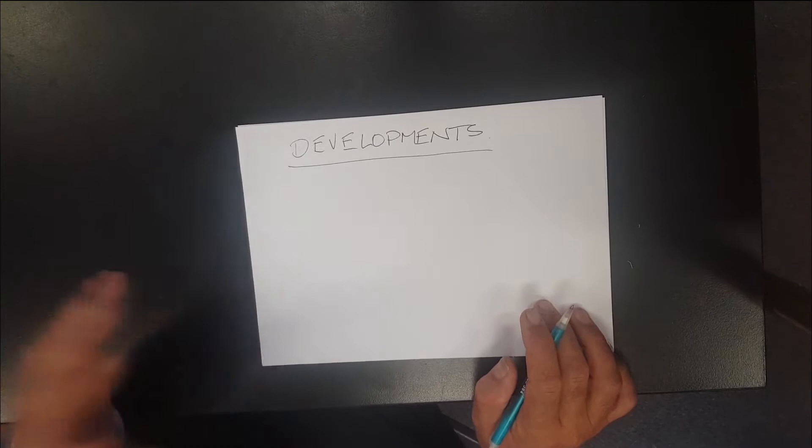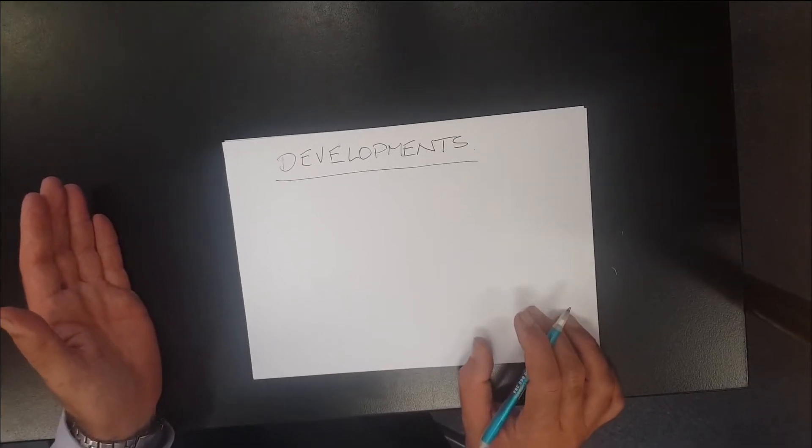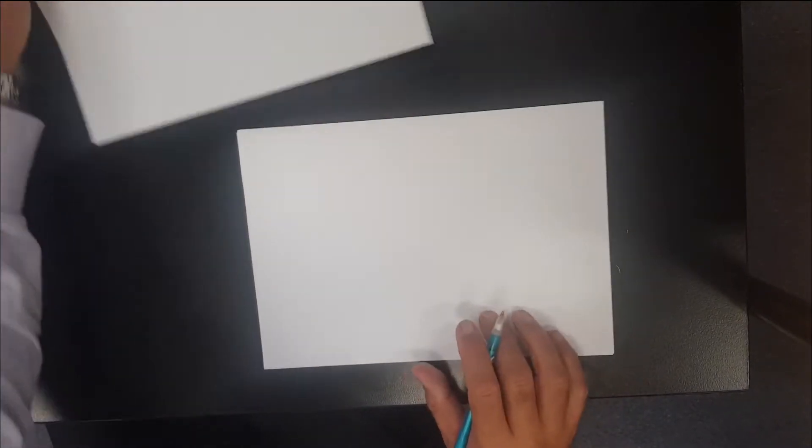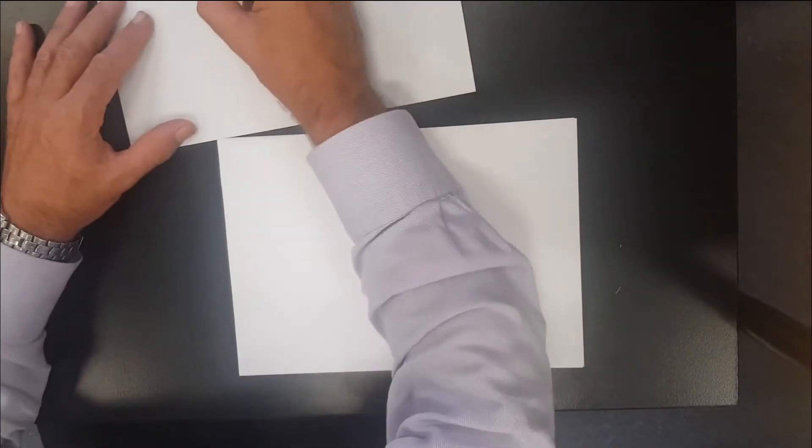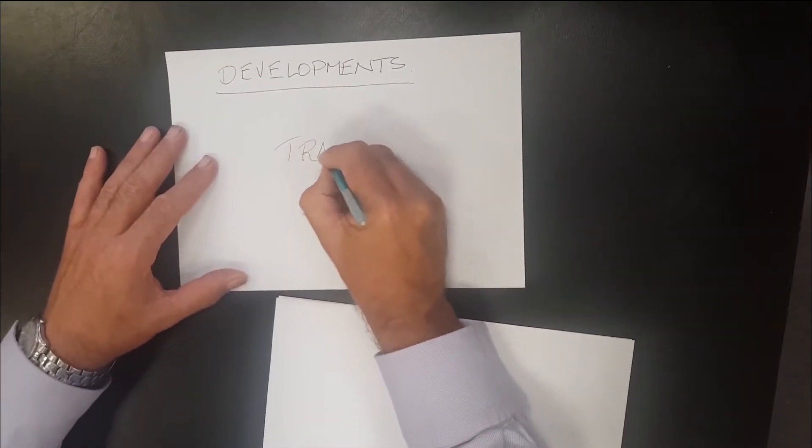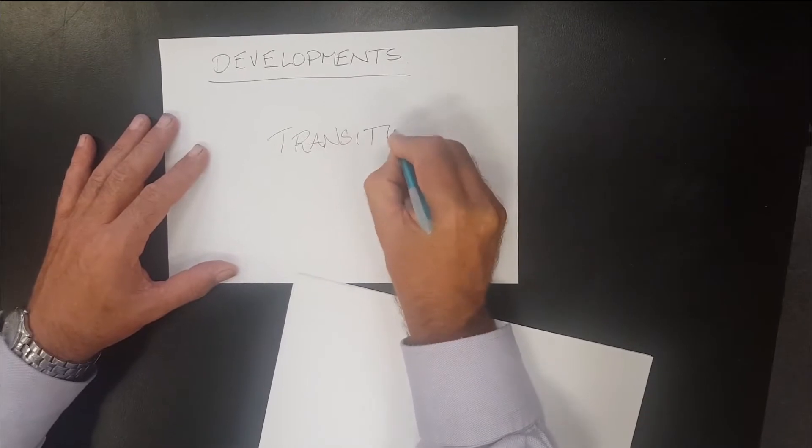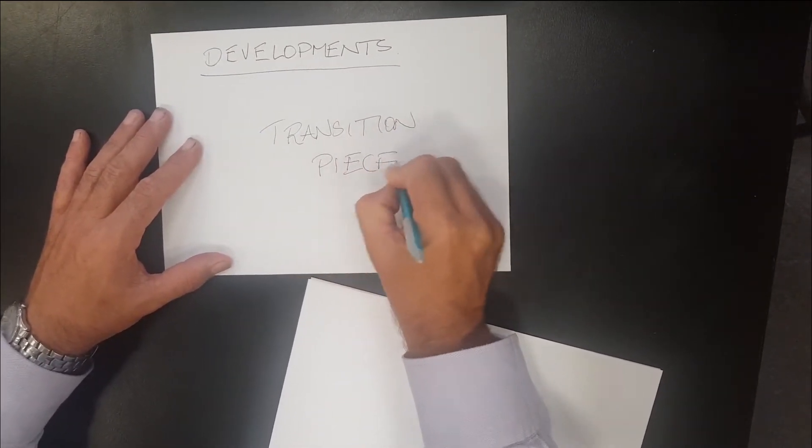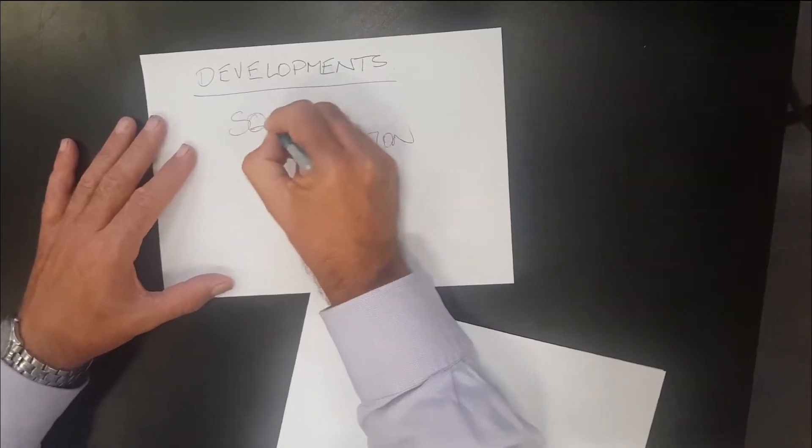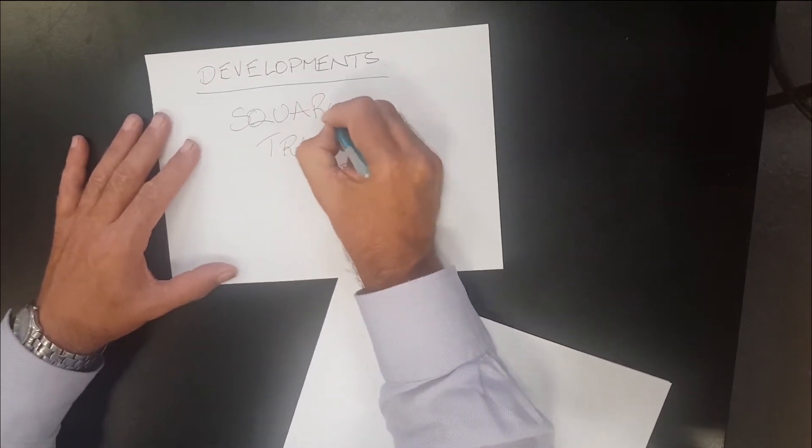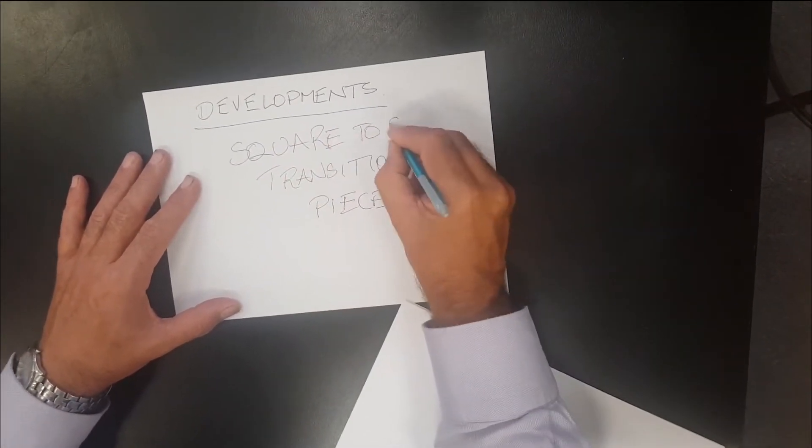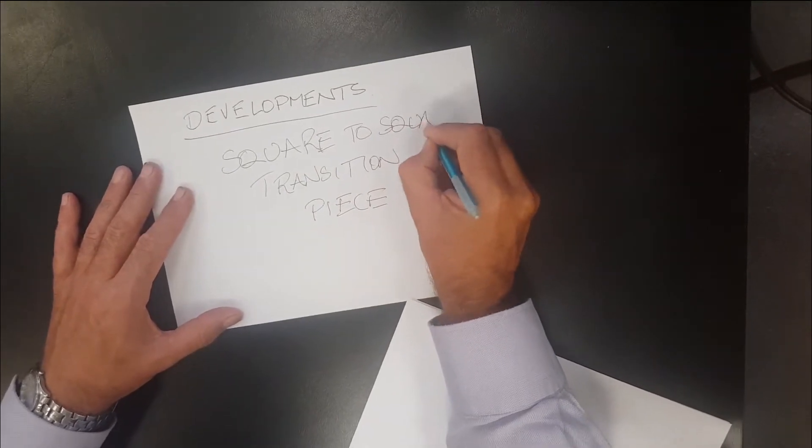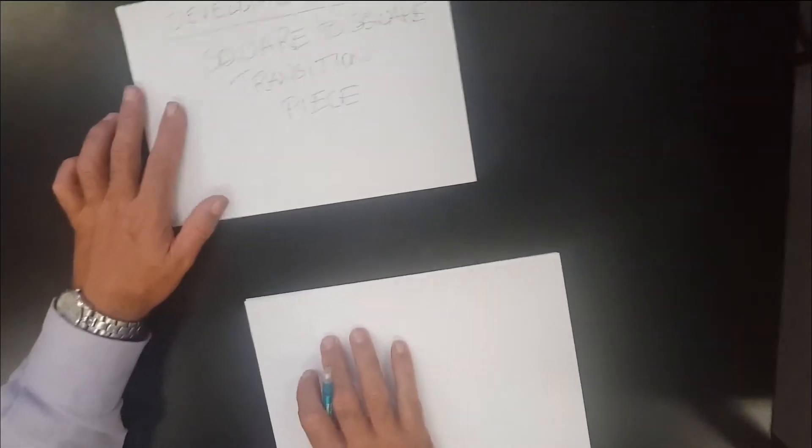You draw things in engineering so you can cut them out and make them. The syllabus specifically says a transition piece. I'll actually put it here on this one. Transition piece. And it's only square to square transition pieces.